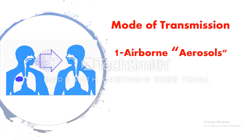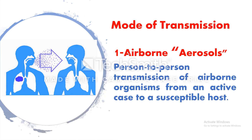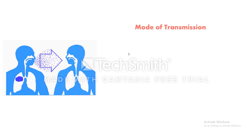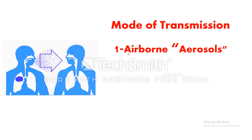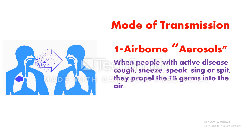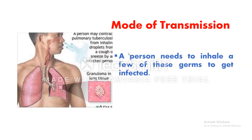The mode of transmission is airborne or aerosol, meaning person-to-person transmission of airborne organisms from an active case to a susceptible host. When people with active disease cough, sneeze, speak, sing, or spit, they propel TB germs into the air. A person needs to inhale only a few of these germs to get infected.